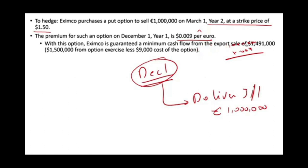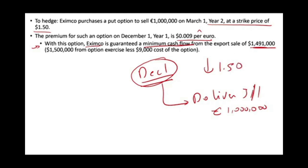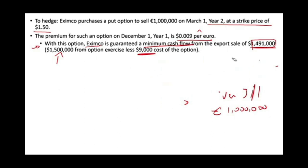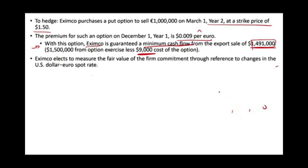With this option, the company is guaranteed a minimum cash flow of $1,491,000. If the price of the euro falls below $1.50, they can sell the euros at $1.50 using the option. If the price is $1.55, they let the option expire and sell at $1.55. The minimum is $1,491,000 because: sell 1 million euros at $1.50 = $1,500,000, minus the $9,000 premium cost = $1,491,000. The company elects to measure fair value through changes in the U.S. dollar spot rate, which must be documented.